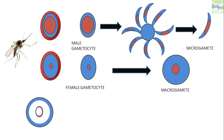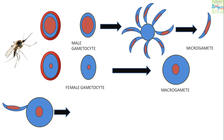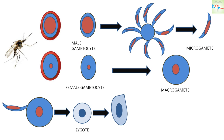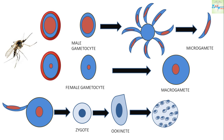The male and female gametes then undergo fertilization to form the zygote. The zygote, which is initially a motionless round body, gradually elongates and forms the motile ookinete. The ookinete then becomes the oocyst, which is yet another multiplicatory phase within which numerous sporozoites are seen. It then ruptures and the sporozoites are released.